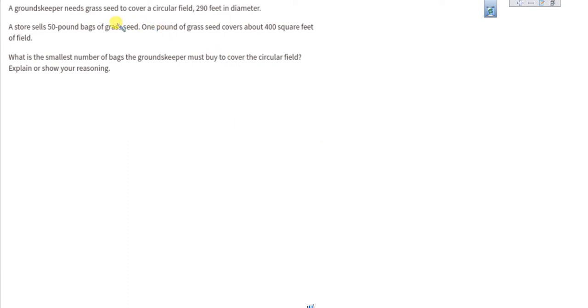A groundskeeper needs grass seed to cover a circular field 290 feet in diameter. Let's do a little sketching here. So we got a grass field that is a circle, and its diameter, the distance across it, is 290 feet.